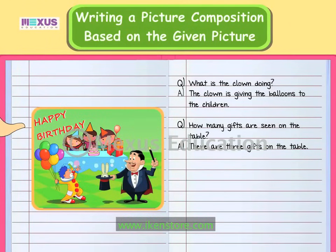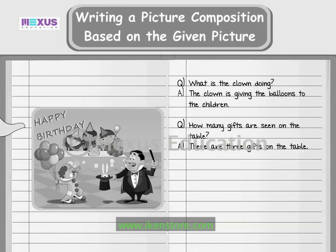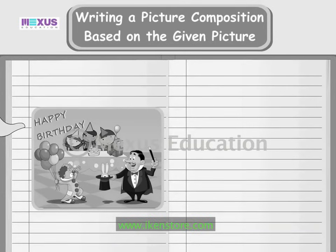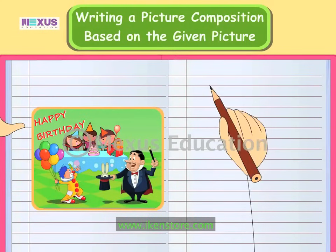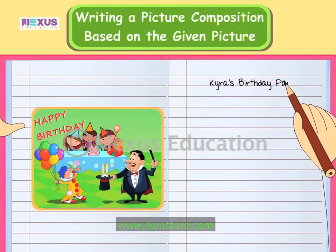These questions and answers help us describe the picture in detail. Based on these points, we can now write a composition of around seven to eight sentences. Let us begin by giving a title to our composition. We can give it the title: Kaira's Birthday Party.